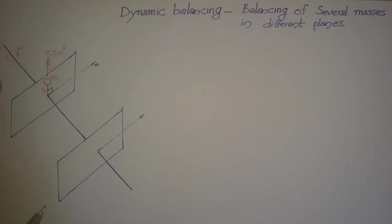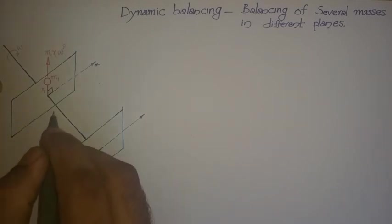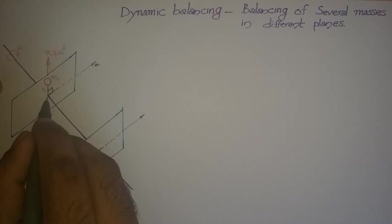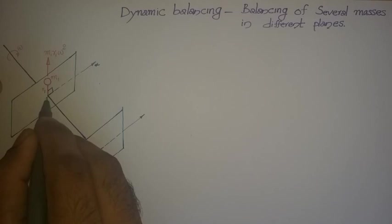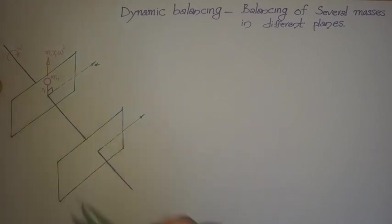This mass will produce a centrifugal force of m1 r1 omega squared, acting radially. In static balancing, we balanced a mass by adding an opposite mass m2, where m2 r2 must lie in the same plane to achieve static balance.